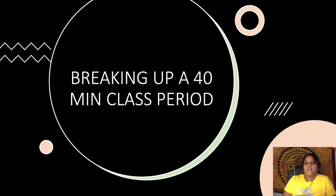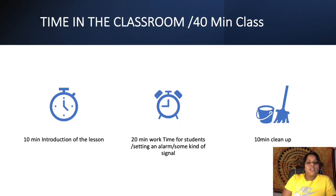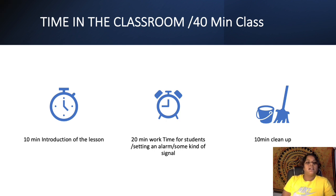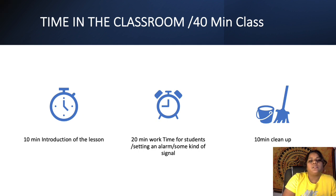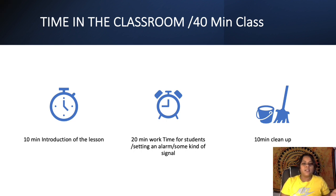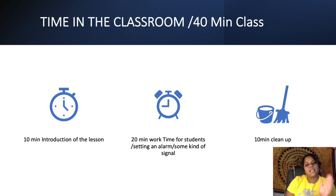Breaking up a 40-minute class period — what does that look like? A good way to start off your 40 minutes is to have about 10 minutes of introducing your lesson. Then you want to break it up with 20 minutes of individual class time where students can individually work on their assignment, whether it's a writing assignment or an art project.